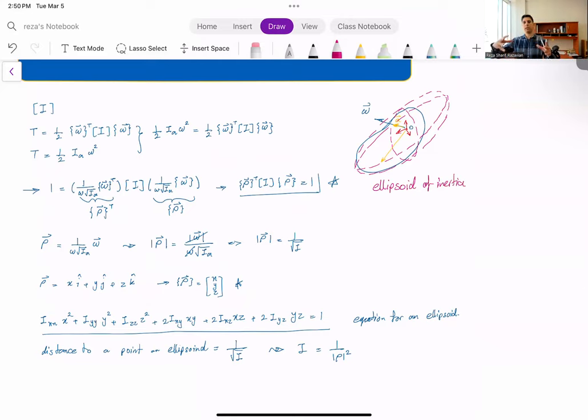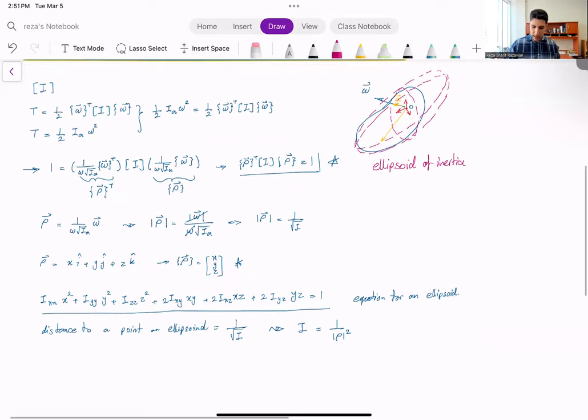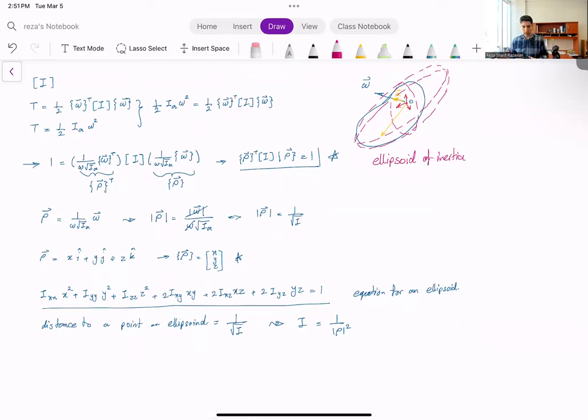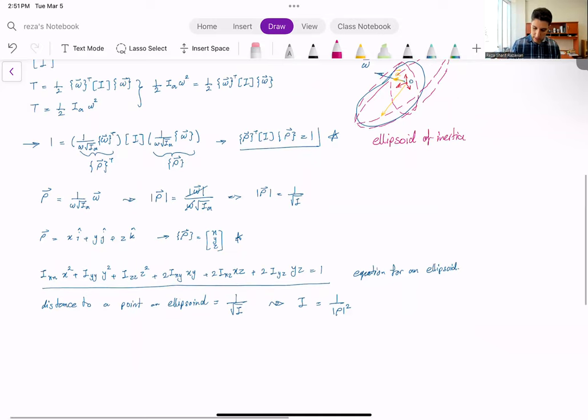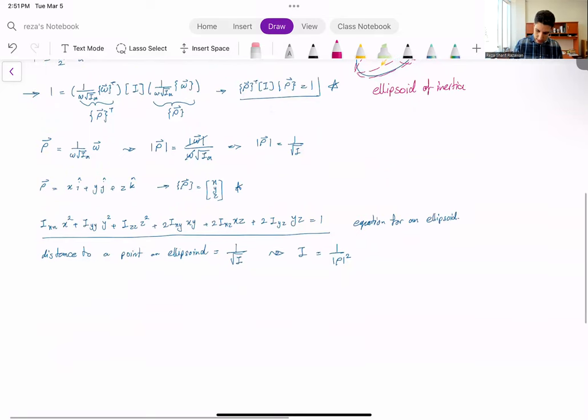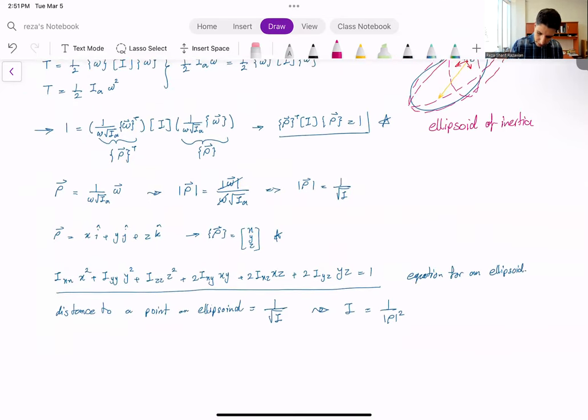And it really tells me, it's a very good visualization of how the moments of inertia of the body look like in space. But more importantly, as we were discussing, if you want to know what is the moment of inertia about a particular axis, you can look at this ellipsoid and see what is the distance from the center to that ellipsoid. And that gives you information about the moment of inertia about that axis.